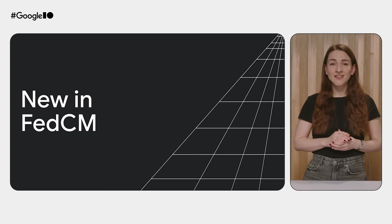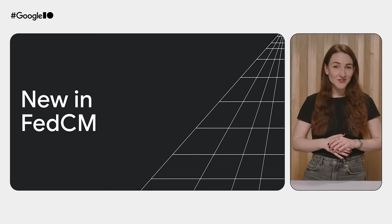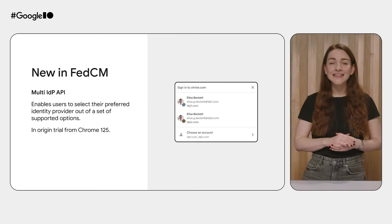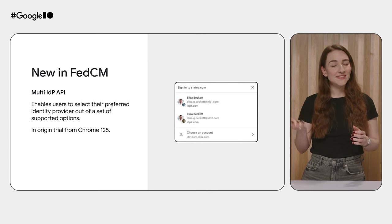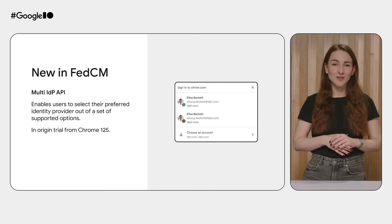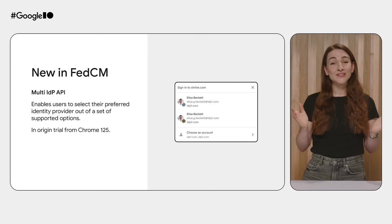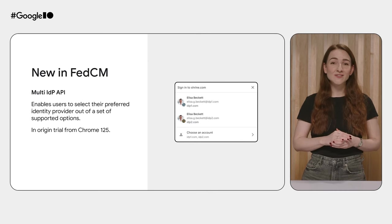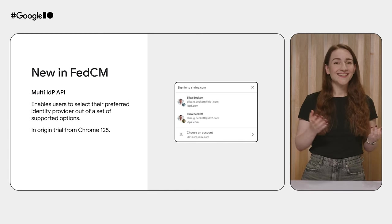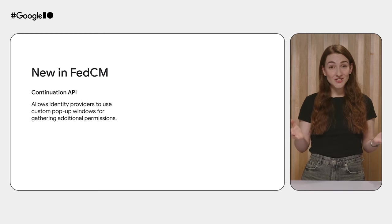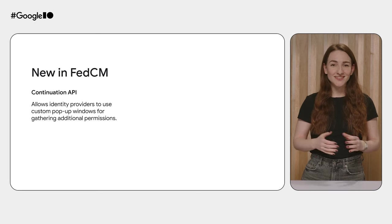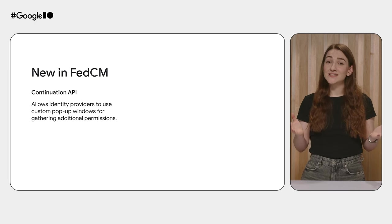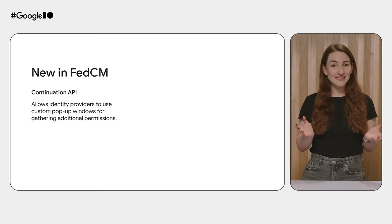FedCM is under active development and there are many exciting new features coming. For example, the Multi-IDP API enables users to select their preferred identity provider out of a set of options that the relying website chooses to support. We believe the Multi-IDP API is going to be great for users who have accounts with more than one identity provider, giving them more choice and control. The Continuation API allows identity providers to use custom pop-up windows for gathering additional permissions, providing more flexibility in how they explain permission requests to users.